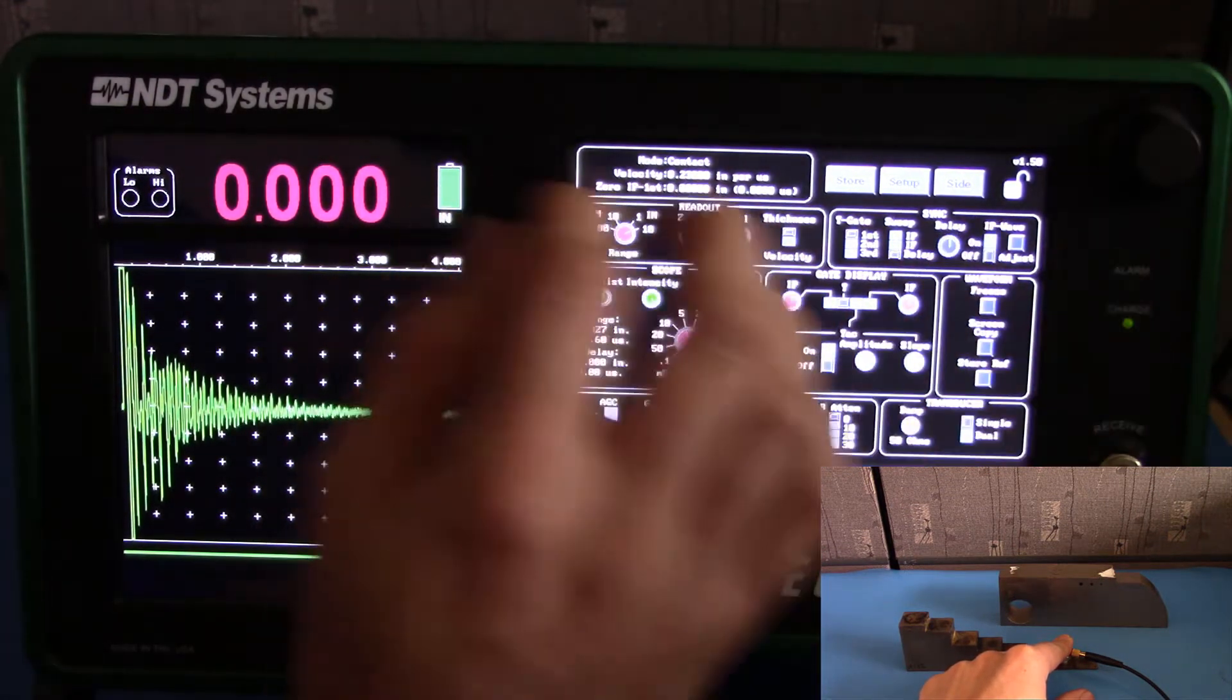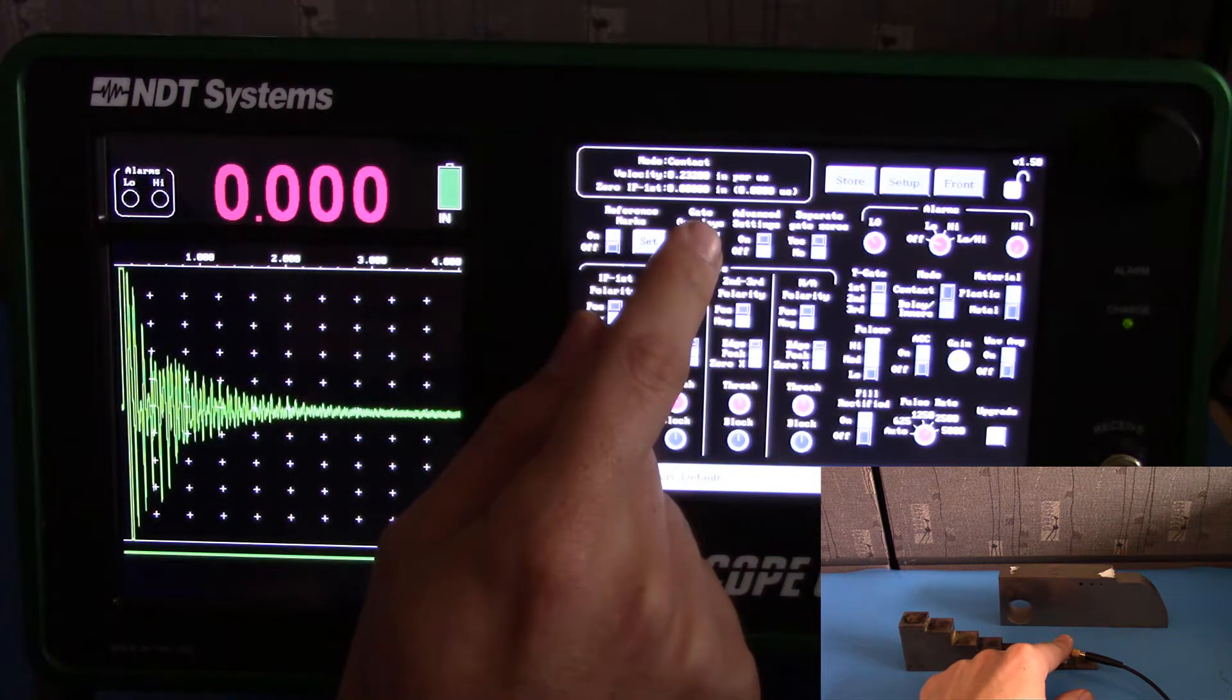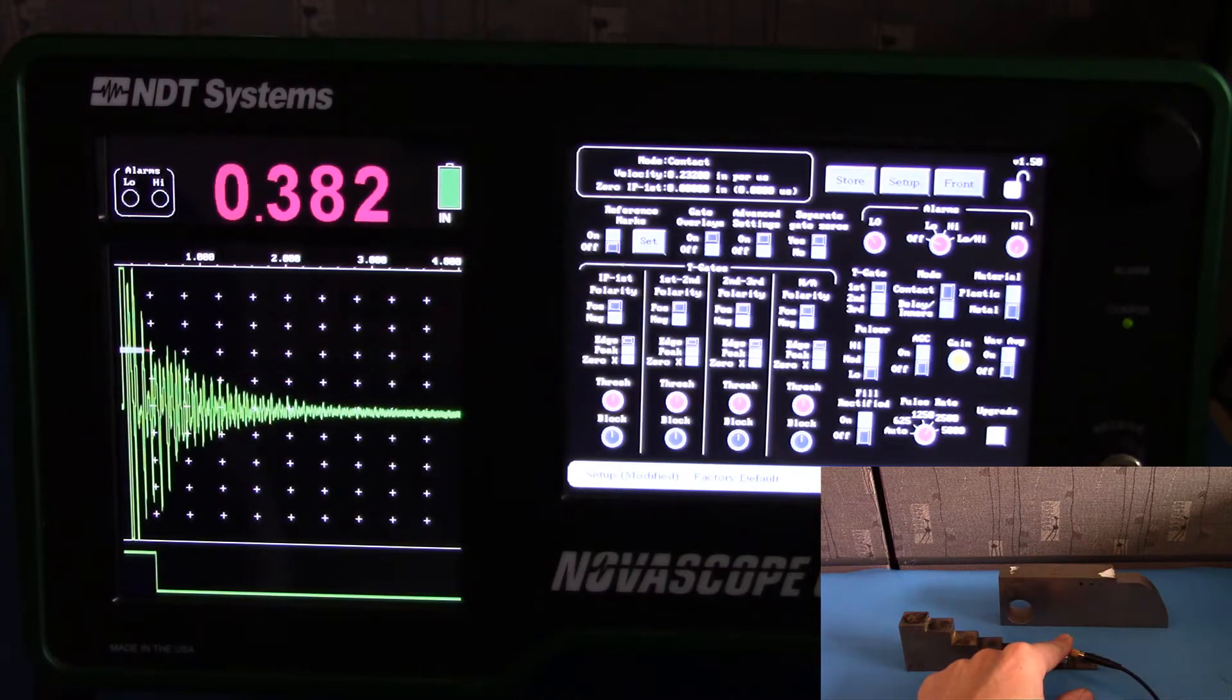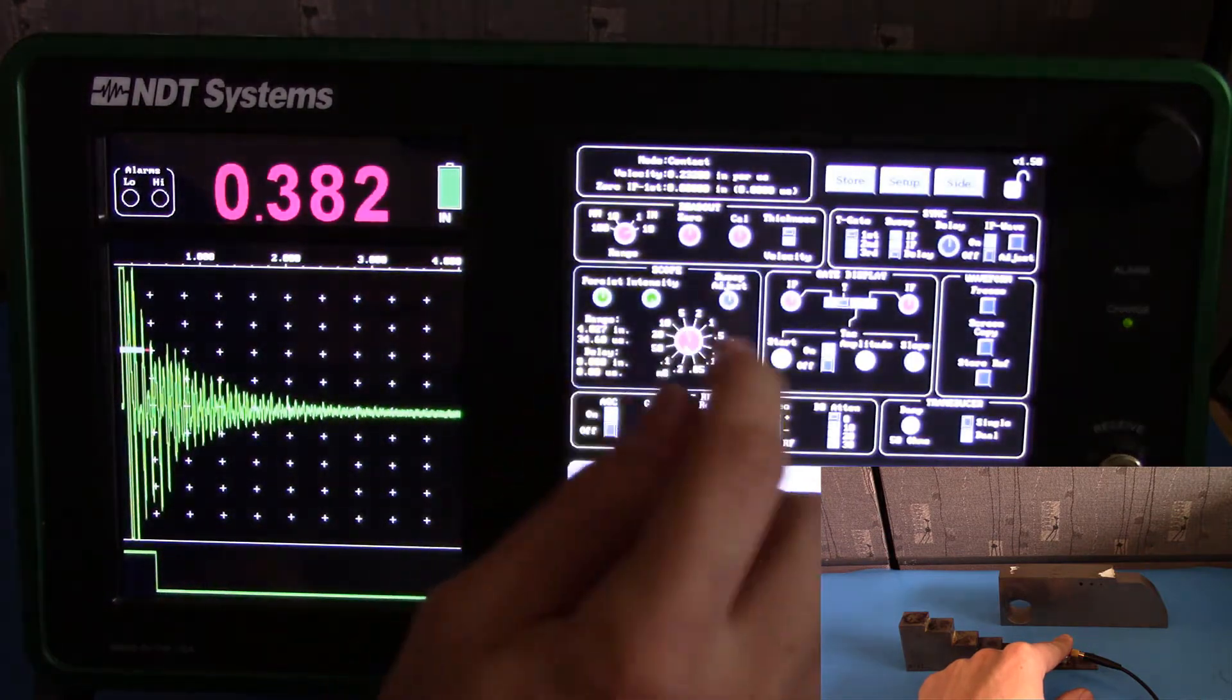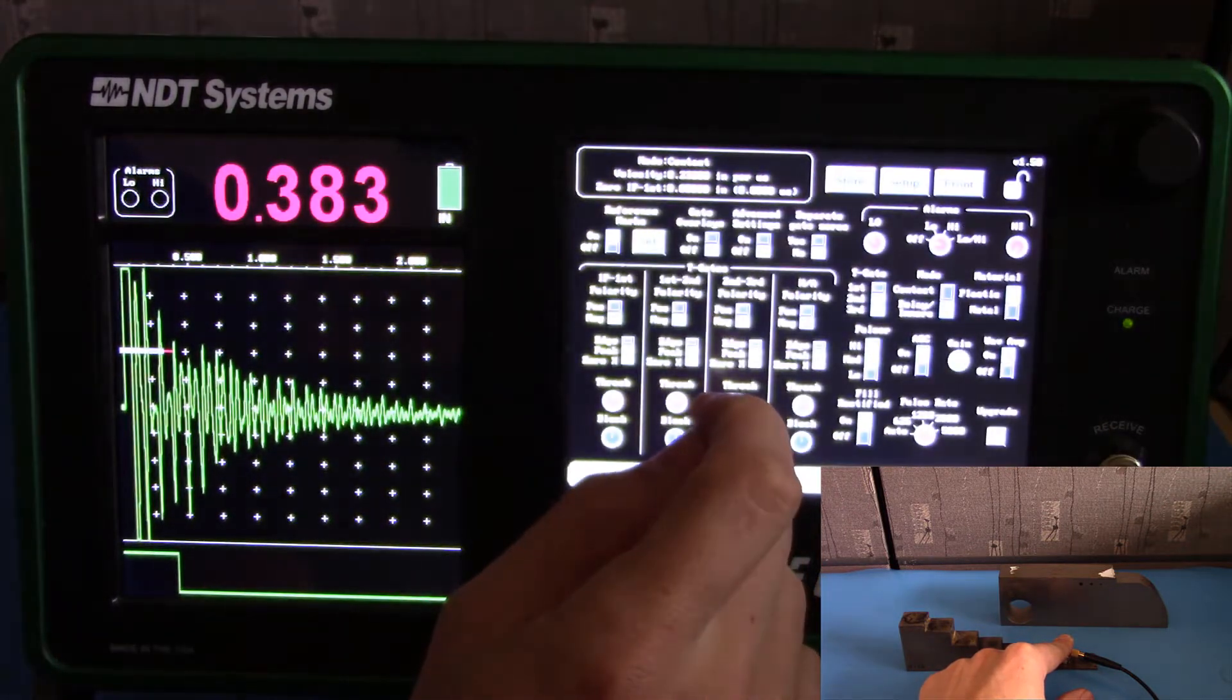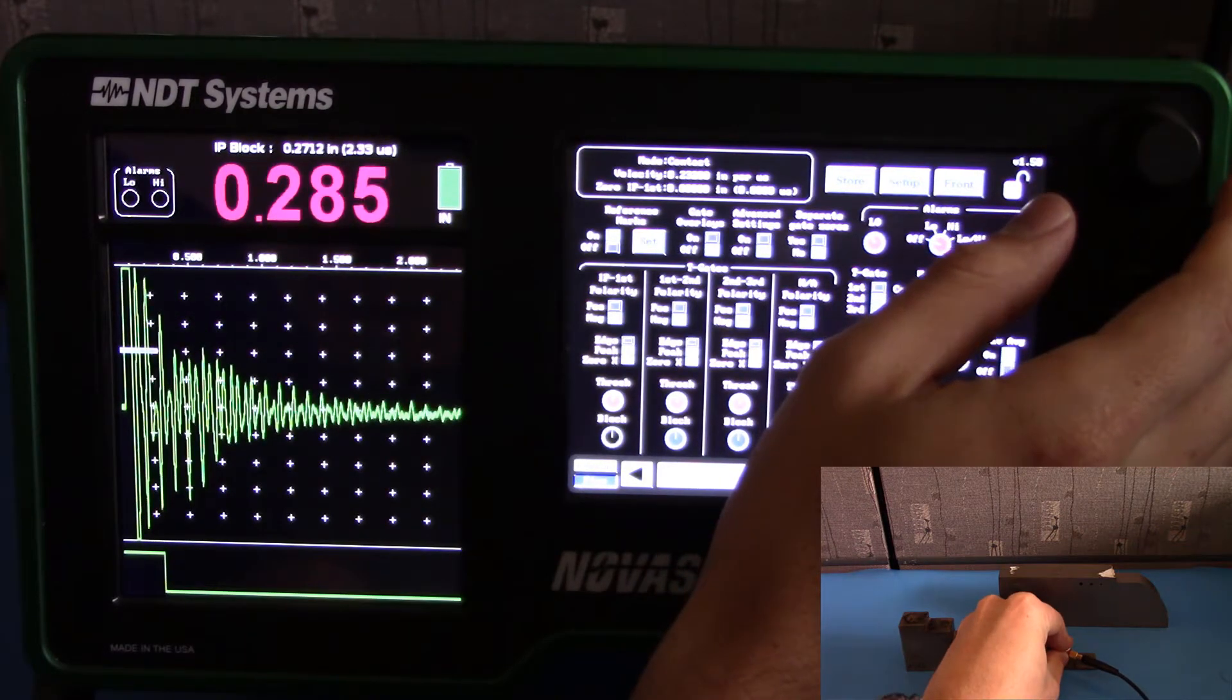Next, while it's coupled, go to the side menu. Go to the Advanced Settings Switch and hit On. Hit Gate Overlays. And now you'll see the trigger gate. We want to set this so that it triggers on the first echo. It should be about right here. Let's go to the front and decrease our range down to 2 inches. Go back to the side. Go to the IP block and decrease that until we hit our first return echo.